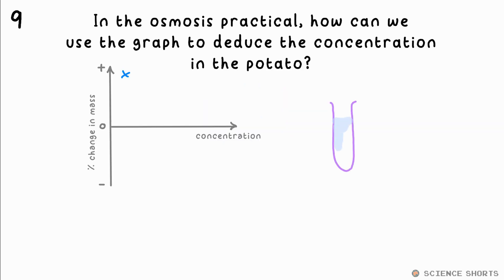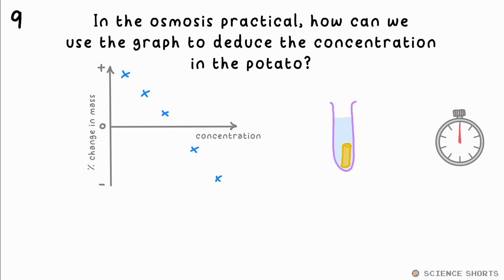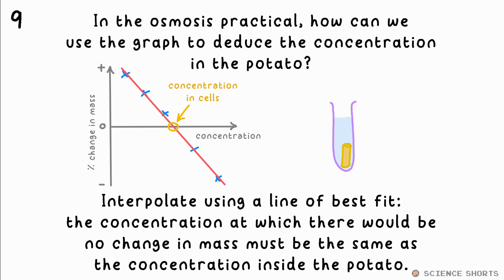In the osmosis practical, how do you find the concentration of sugar inside the potato from the graph? We interpolate using a line of best fit. Where it crosses the x-axis, that's the concentration at which no osmosis would occur, showing that this concentration is therefore the same as that inside the potato cells.